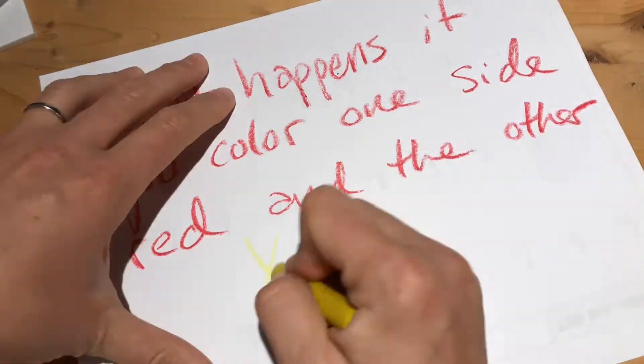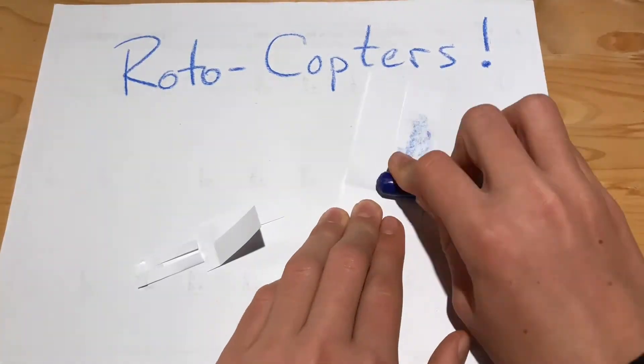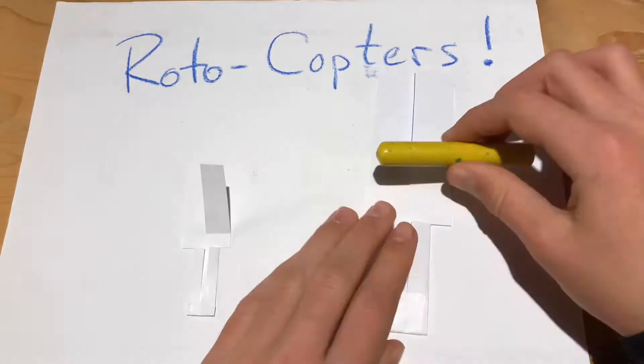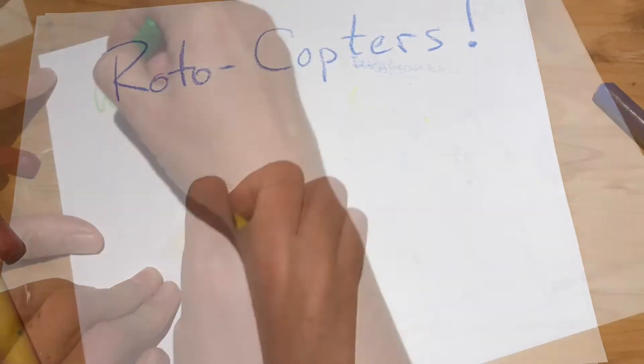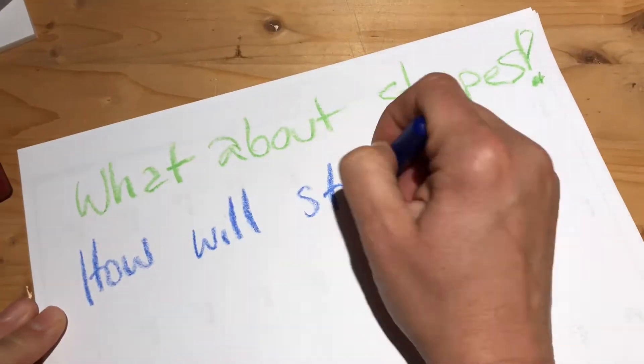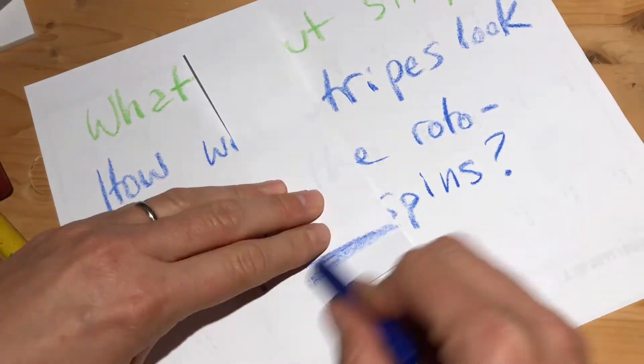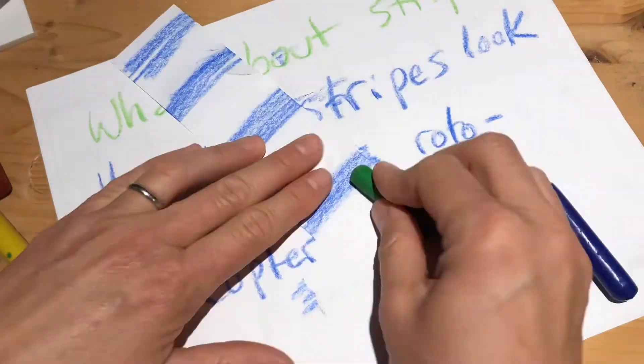Maybe you have some other questions. What happens if you color one side red and the other yellow? Or one side blue and the other side yellow? What about stripes? How will stripes look when the Rotocopter spins? This is worth trying.